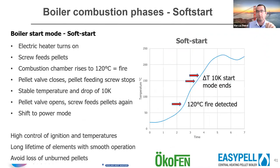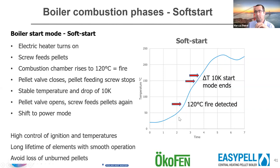Looking at how the boilers run: the Ökofen has a soft start where ignition is detected at 120 degrees, then it stabilizes and pauses essentially, flattening the curve before shifting into power mode. The Austrians are patient and calm — they let it move through the stages slowly, protecting components and achieving good longevity and controlled combustion. You really don't want to do what we do with gas — just turn on the burners at full noise.